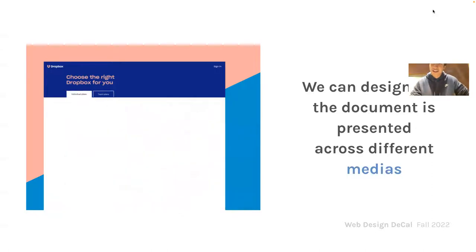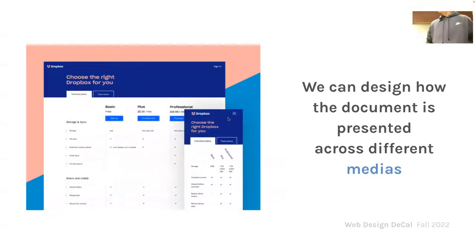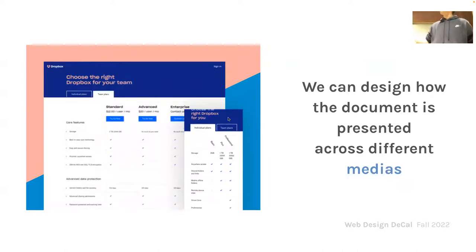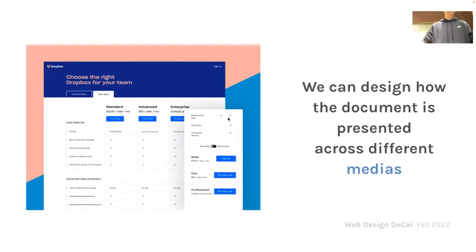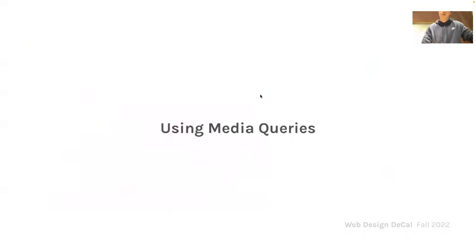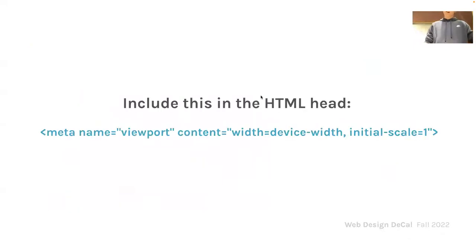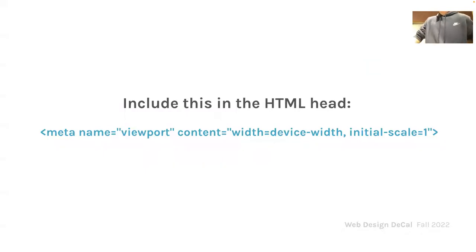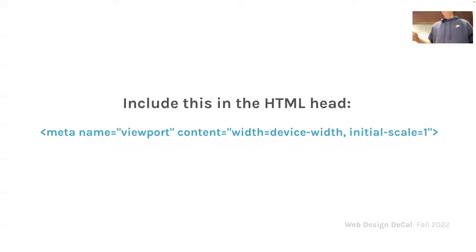The purpose of media queries is to design how a website can be seen across different types of media — your phone, laptop, computer, and all that. To use media queries in code, you need to include a specific meta tag in your HTML head. Don't worry too much about what each attribute means — basically it makes sure the website knows the width of your screen and sets the initial scale to 1.